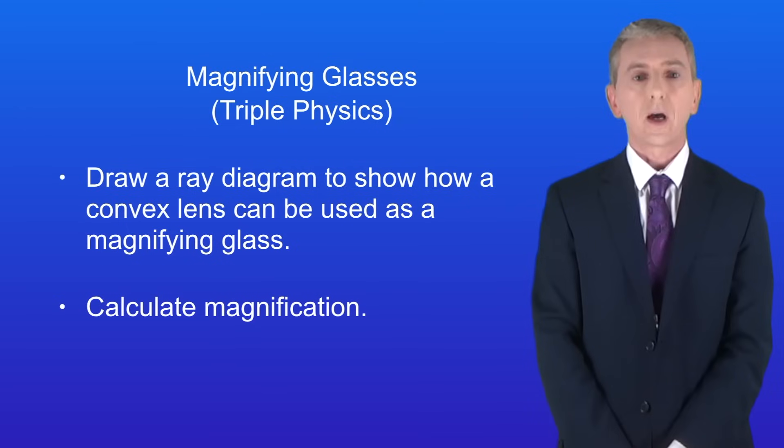In the last video we saw how to construct ray diagrams for convex lenses. We saw that the properties of the image depend on the distance between the object and the lens.